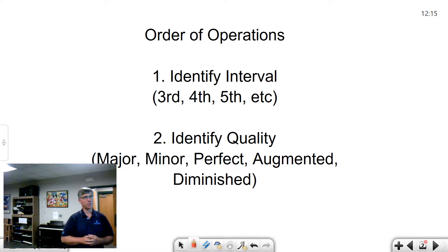First, let's talk about the order of operations. When identifying intervals, we're looking at two different things: the interval name (is it a second, third, sixth, fifth?) and the interval quality (major, minor, perfect, diminished, or augmented). We always want to identify the interval first.